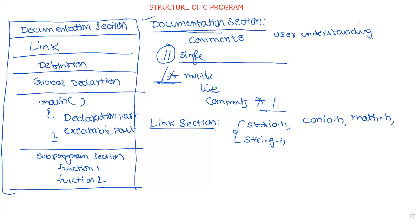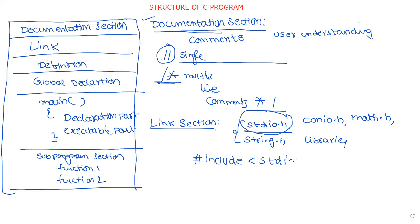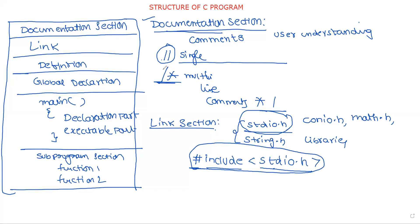According to our requirements, we include these header files — called libraries — into our program. If we want to use functions from these libraries, we have to provide instructions to the compiler to link our program to that library. We achieve this using the statement: hash include stdio.h. Here, hash is a preprocessor directive. Once we write this statement, the header file is linked to our program. This is the link section.